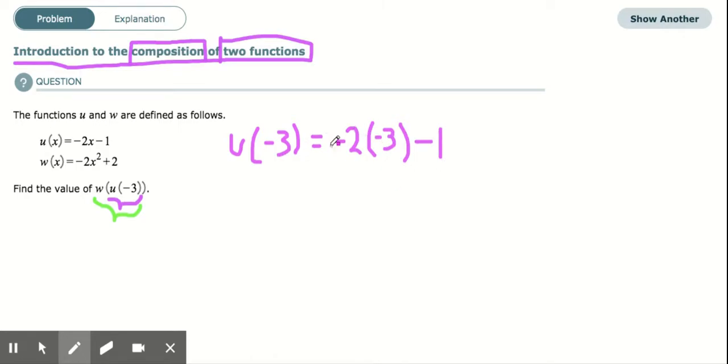We're going to solve for this. Negative 2 times negative 3, because we do multiplication before subtracting, that's positive 6. And 6 minus 1 gives us 5.